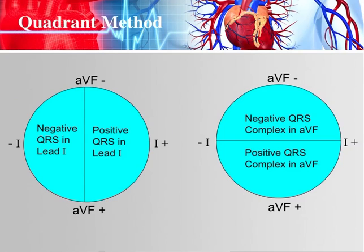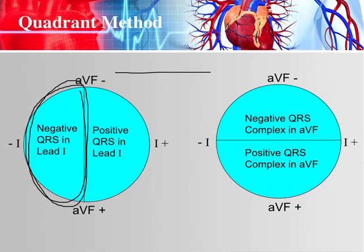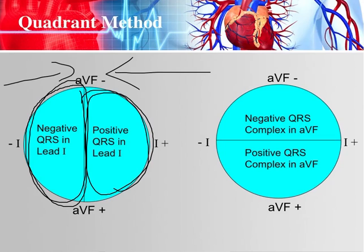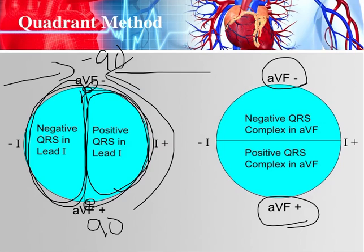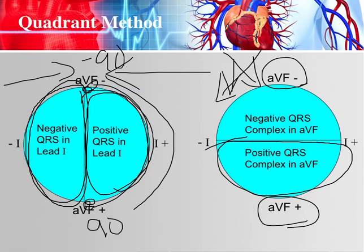If you make a circle and put the positive and negative electrodes around it, you know that if you have a negative QRS complex in lead one, your axis must be going in that direction. If it's a positive QRS complex in lead one, it must be going the other way — from 90 to negative 90. Similarly, with AVF, if you had a positive QRS complex, you'd have an axis going downward. If negative in AVF, the axis would be upward.